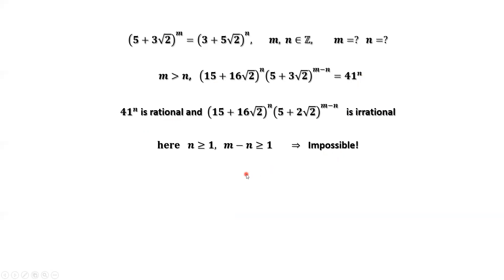What does that mean? That means m and n can only be 0. m = n = 0 is the only answer. That's all — thanks for watching and see you next time.